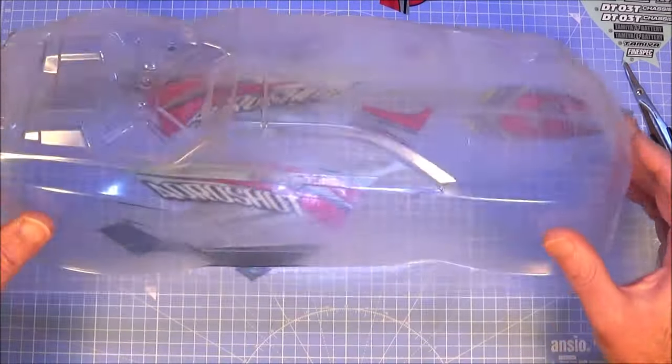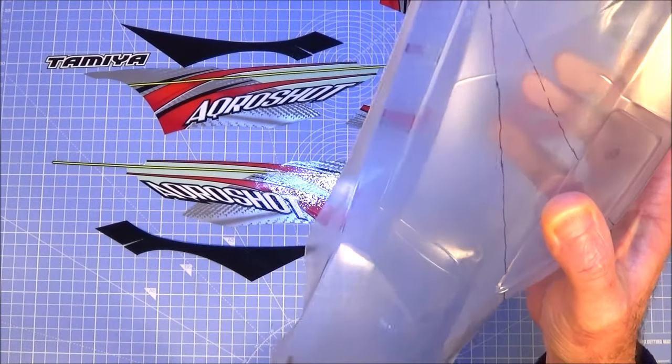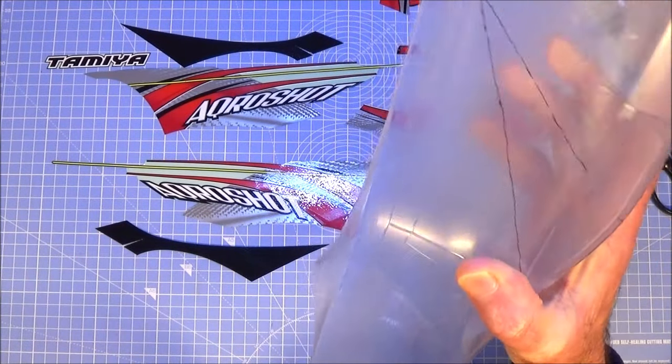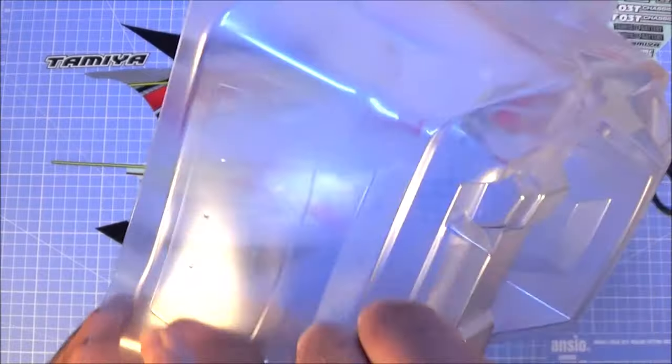I've already been cutting out some of the decals or stickers as you can see, trying to work out my design, but the first thing I need to do is get this thing cut out. So I'll start as usual by just loosely trimming off the excess, making sure not to cut through the rear wing there on the back.